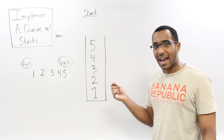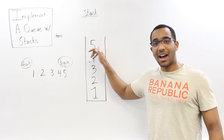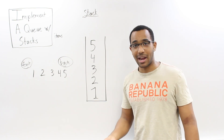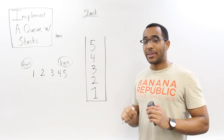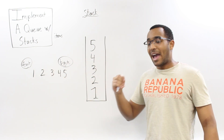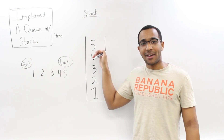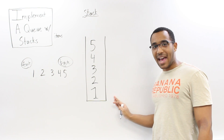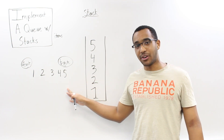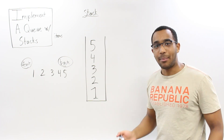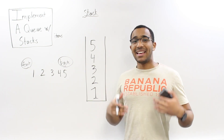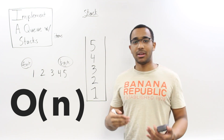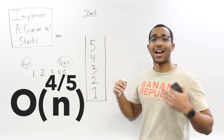But we have a stack, and a stack only gives us access to five. Once we remove five, we have access to four, then three, then two, then one. If I call dequeue right now, the caller expects one - but we can't give that directly. This is barrier number one: the LIFO behavior of a stack clashes with the first in first out behavior of a queue.